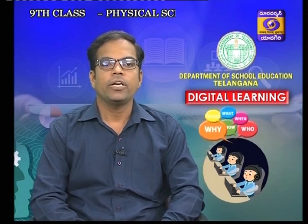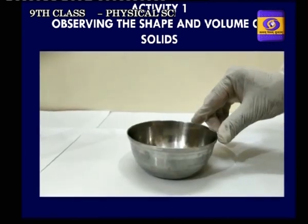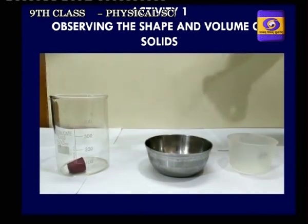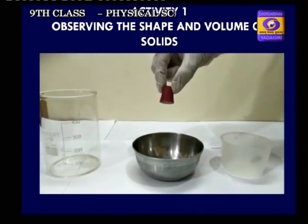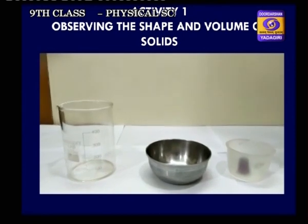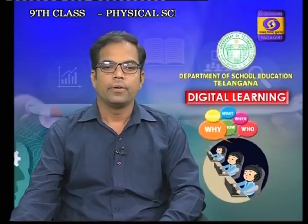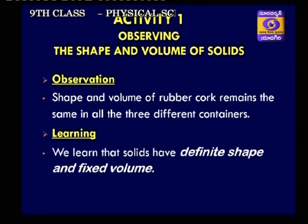Let us perform an activity to observe the shape and volume of solids. Take three different containers: a glass beaker, steel vessel, and plastic container. Take a rubber cork and put it into the glass beaker, then into the steel vessel, then into the plastic container. Observe the changes. The shape and volume of the rubber cork remain the same in all three containers. We learn that solids have definite shape and fixed volume.